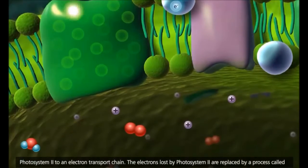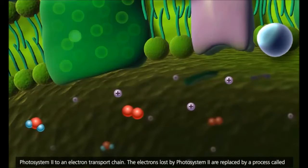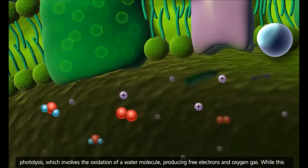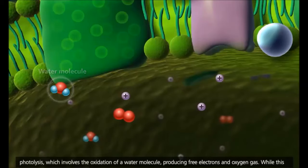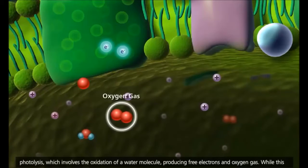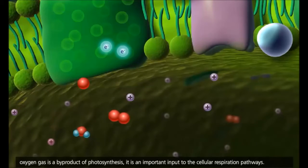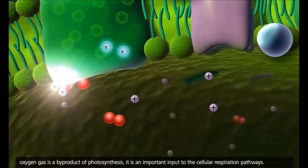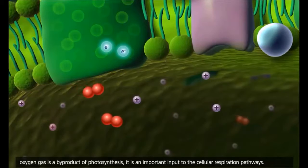The electrons lost by photosystem II are replaced by a process called photolysis, which involves the oxidation of a water molecule producing free electrons and oxygen gas. While this oxygen gas is a by-product of photosynthesis, it is an important input to the cellular respiration pathways.